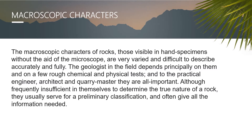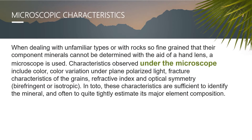The next method is microscopic characteristics. When dealing with unfamiliar types, or with rocks so fine-grained that their component minerals cannot be determined with the aid of a hand lens, a microscope is used. Characteristics observed under the microscope include color, color variation under plane polarized light, fracture characteristics of the grains, refractive index, and optical symmetry. In total, these characteristics are sufficient to identify the mineral and often to quite tightly estimate its major element composition.